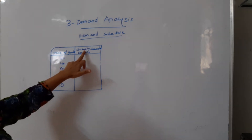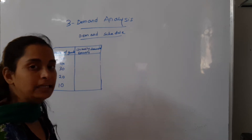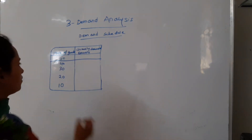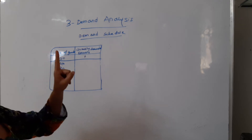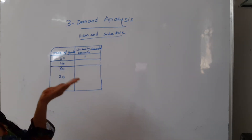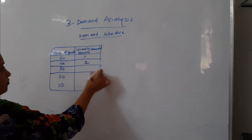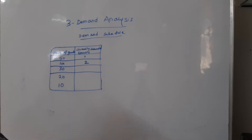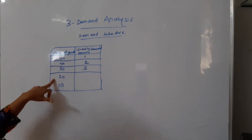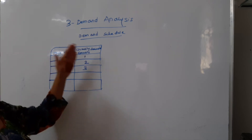Now let's see how much quantity is demanded by consumers at each price level. When the price was 50 — which is the highest — demand was only 8. When prices decreased by 10 to 40, there was a slight increase in demand of 2. When prices again went down to 30, the quantity demanded increased by 3. When prices decreased further to 20, demand increased by 4.